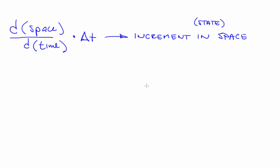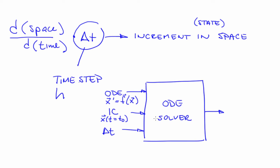That delta T, the time step, which I will sometimes call H just because it's easier to write, is actually a third input to an ODE solver. And the output of the ODE solver is where X will be at T0 plus delta T. That time step input tells the solver how fine-grained of a solution you want.